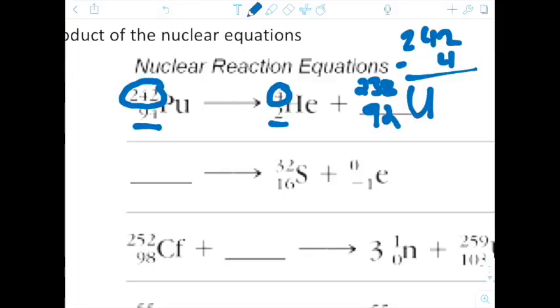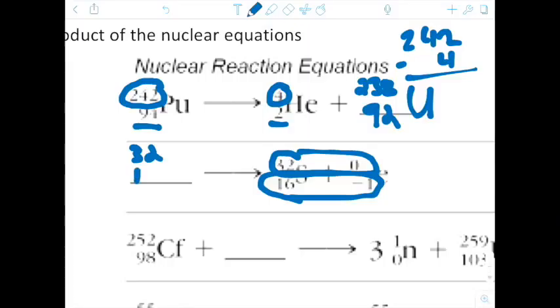Going backwards or the next one, we see we're going backwards. We have 32 on top on this side, and so we need 32 over here. Now we have 16 and minus 1, which 16 and minus 1 is a total of 15, so we need 15 over here. And the element that has 15 protons would be phosphorus.